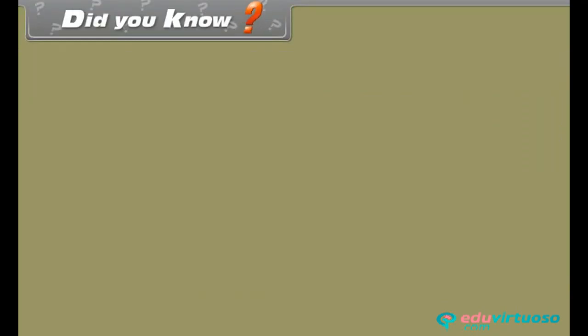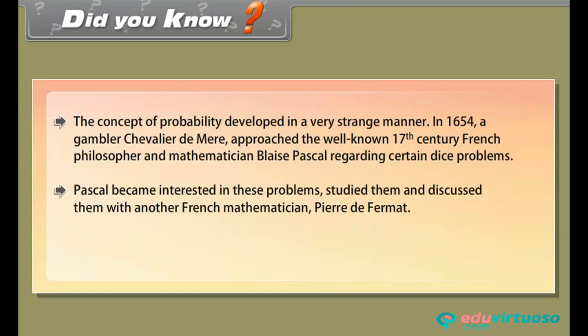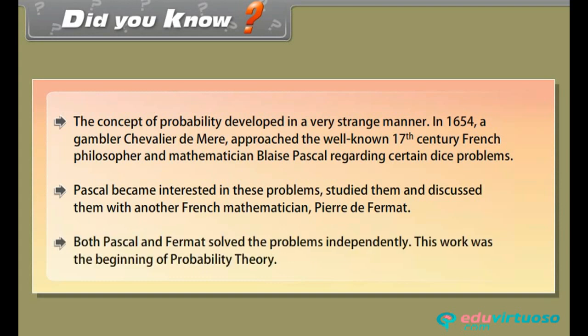Did you know? The concept of probability developed in a very strange manner. In 1654, a gambler, Chevalier de Mer, approached the well-known 17th century French philosopher and mathematician Blaise Pascal regarding certain dice problems. Pascal became interested in these problems, studied them, and discussed them with another French mathematician, Pierre de Fermat. Both Pascal and Fermat solved the problems independently. This work was the beginning of probability theory.